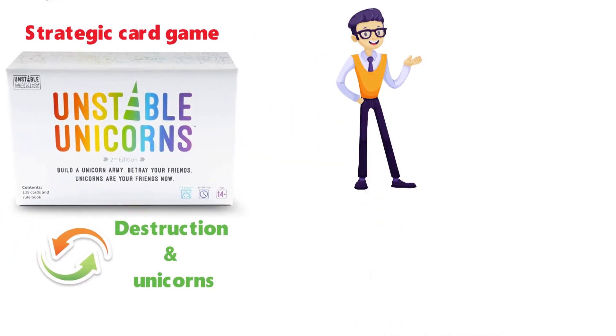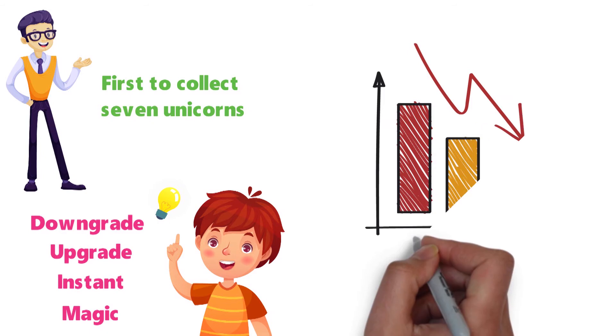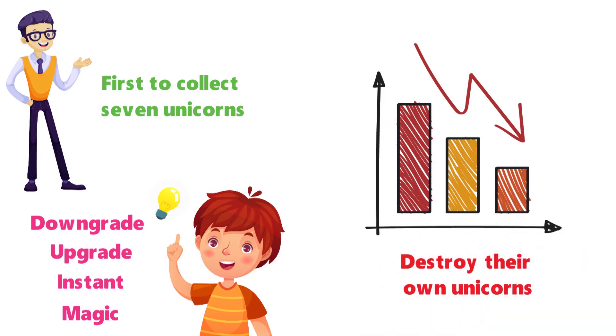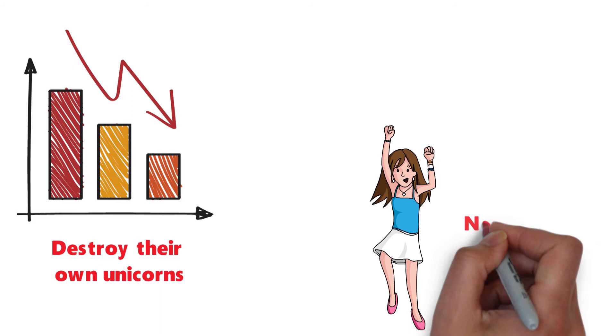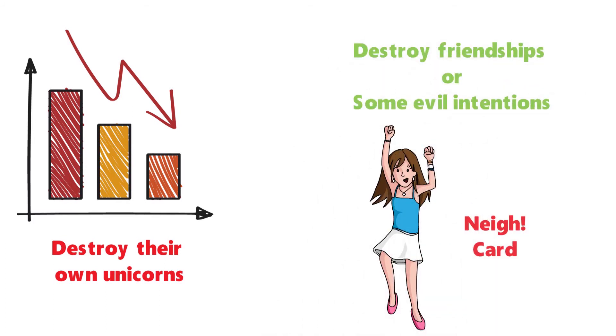The goal of the game is to be the first to collect seven unicorns in your play area. You need to strategically use cards like Magic, Instant, Upgrade, and Downgrade to hinder your opponent's progress and destroy their own unicorns. Excitement is guaranteed with the introduction of the Neigh card, which may destroy friendships or at least some evil intentions.